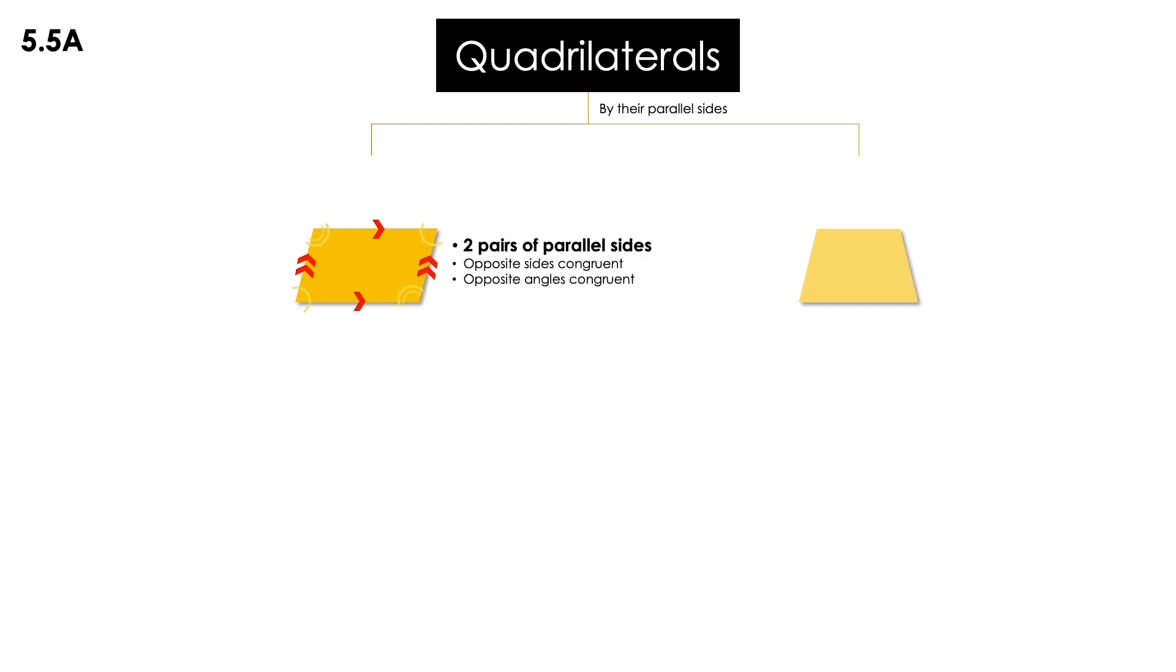Whenever you're checking the angles, the opposite angles are congruent when you see this shape. On the right side now, I see one pair of parallel sides and also this shape could have two possible pairs of perpendicular sides.